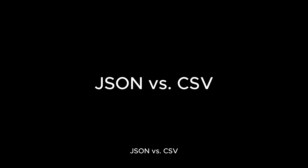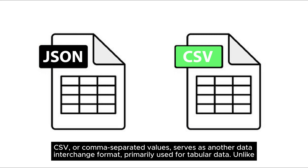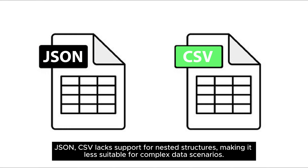JSON vs. CSV. CSV, or comma-separated values, serves as another data interchange format, primarily used for tabular data. Unlike JSON, CSV lacks support for nested structures, making it less suitable for complex data scenarios.